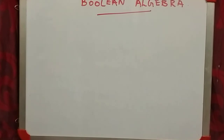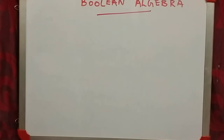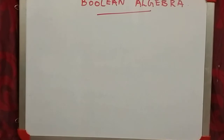We are going to use the binary number system in language, in system processing, and in machine language. Boolean algebra is used in the computer system, the processor, and CPU — the design of the computer system.